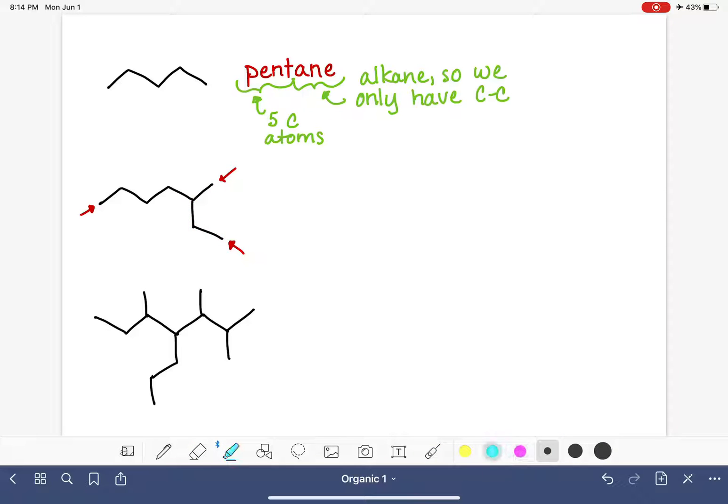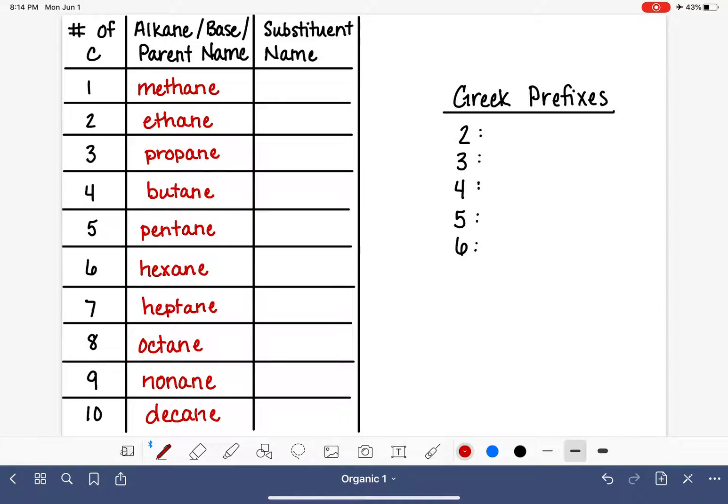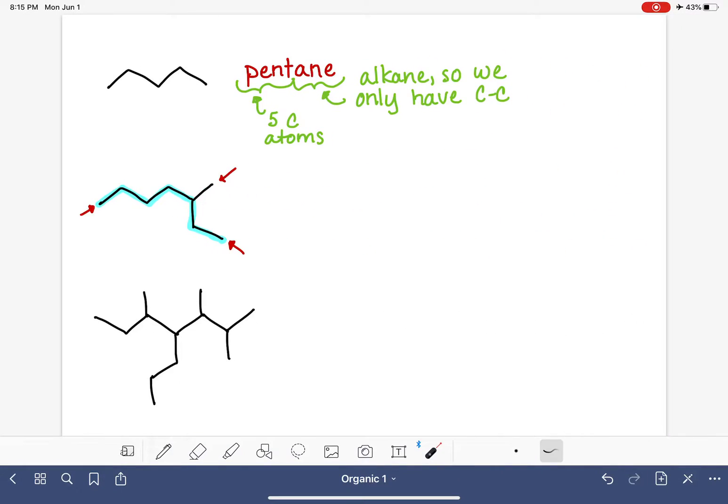So our parent chain, which I'm going to highlight, is right here. That is the parent chain of the molecule. And that's the first step in naming this molecule. That parent chain had seven carbons in it. And let's look at this list over here. A seven carbon molecule is a heptane. So this molecule is going to be some derivative of heptane. It's not heptane because it has this attached to it, but its name is going to have heptane in there somewhere.